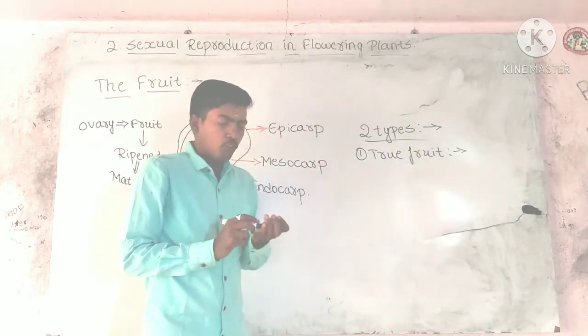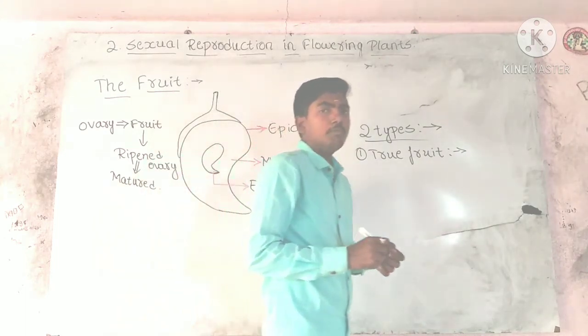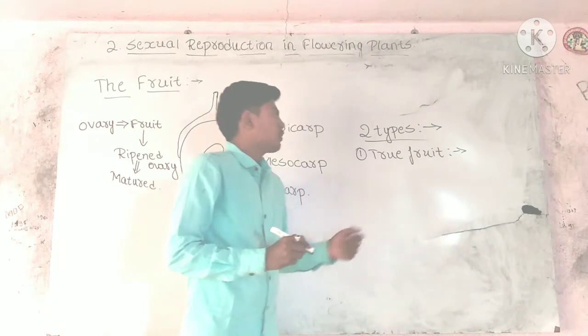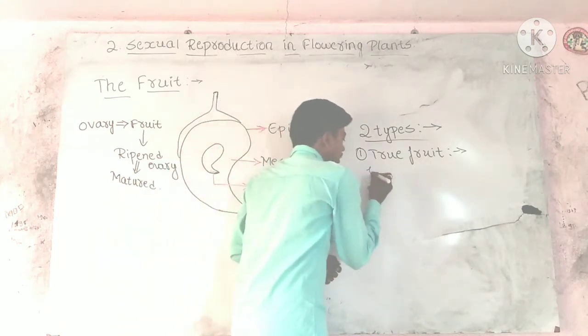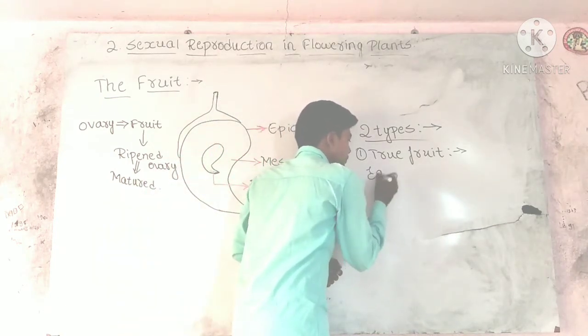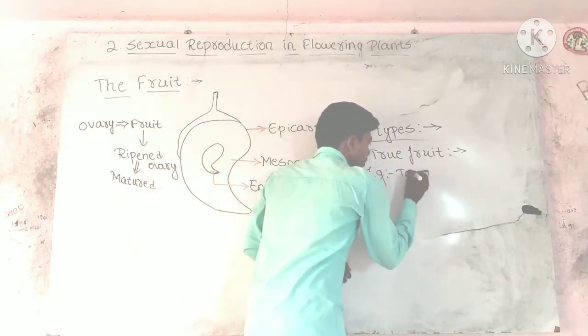What is true fruit? Fruit that develops from the ovary is called true fruit. For example, tomato and grapes.